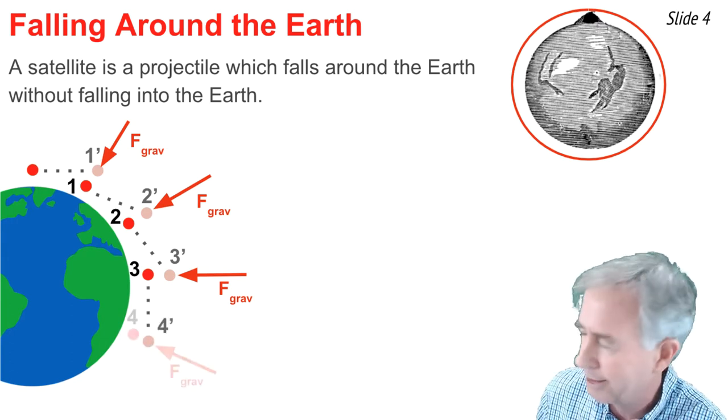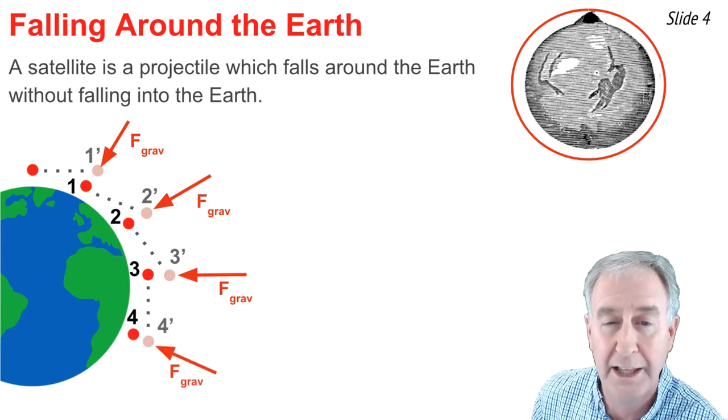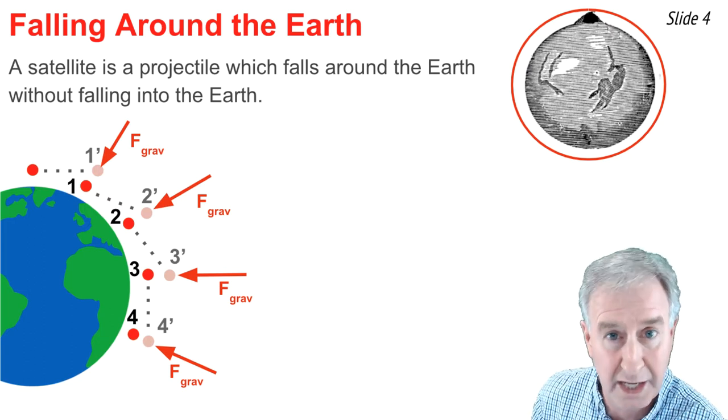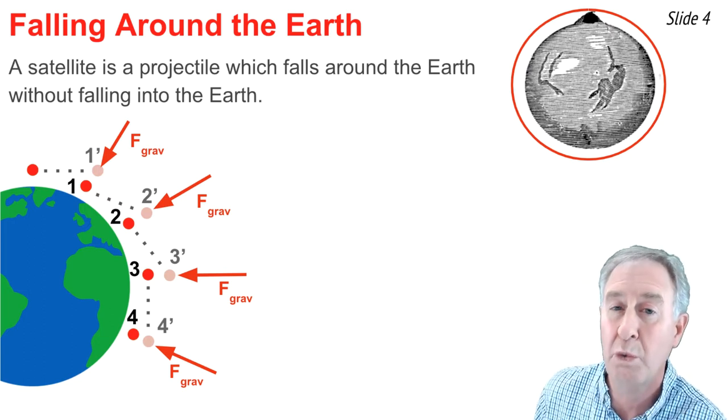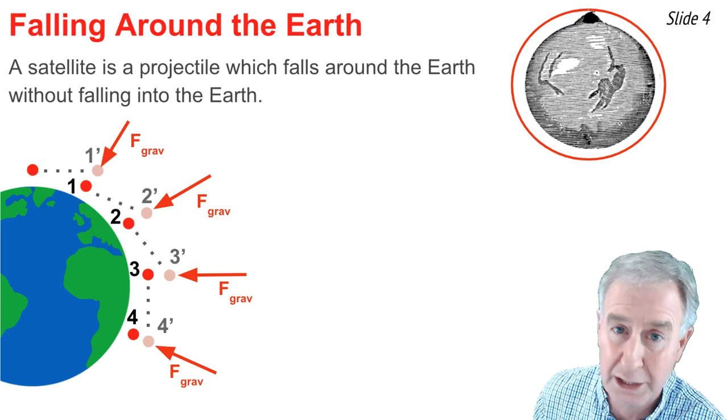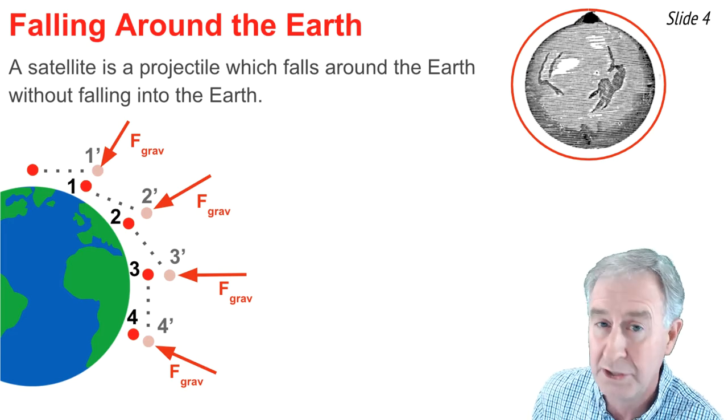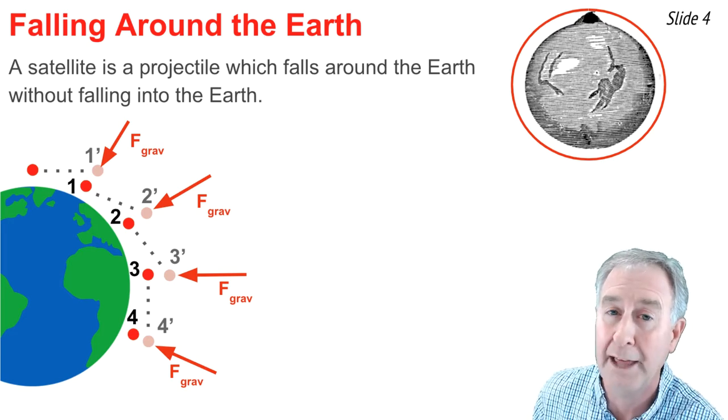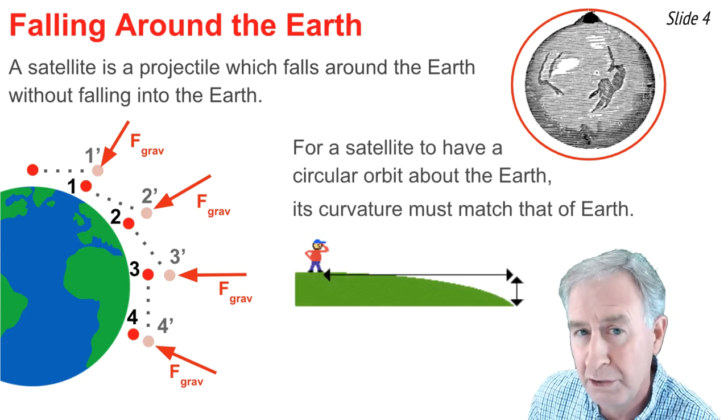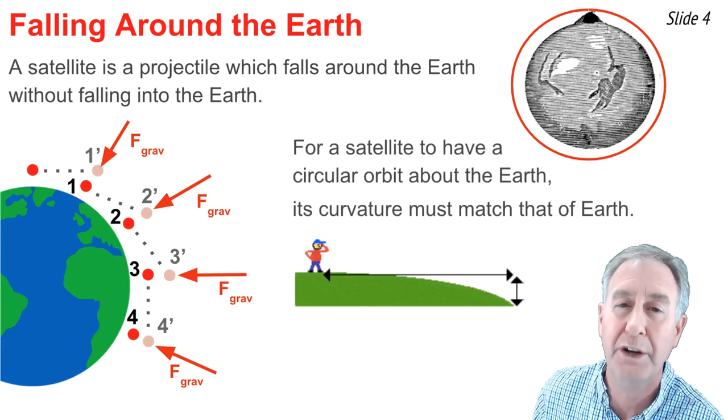This thought experiment could continue. And what we have is a projectile that is launched horizontally at such a high speed that it falls towards the Earth, but never falls into the Earth. In order to have a satellite make a circular path around the Earth, its curvature must match the curvature of the Earth.